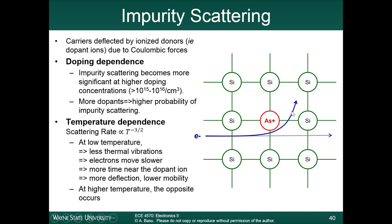Impurity scattering has the temperature dependence of T to the negative three halves, because at lower temperatures there are fewer thermal vibrations, so the electrons move slower through the lattice. The electron spends more time near the dopant ion, so there is more time for the dopant ion to exert Coulombic forces on the electrons and it gets deflected more. At higher temperatures, the opposite occurs.